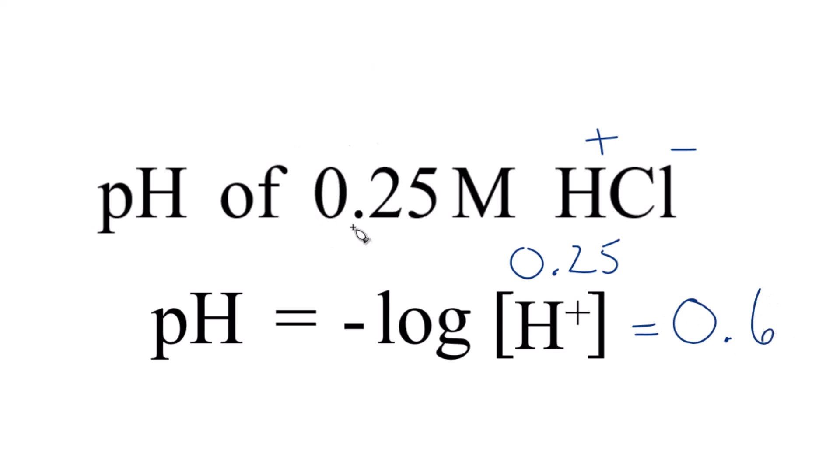So the pH of our 0.25 molar solution of HCl, that is 0.6. Makes sense. HCl is an acid, so it should have a pH that's below 7.